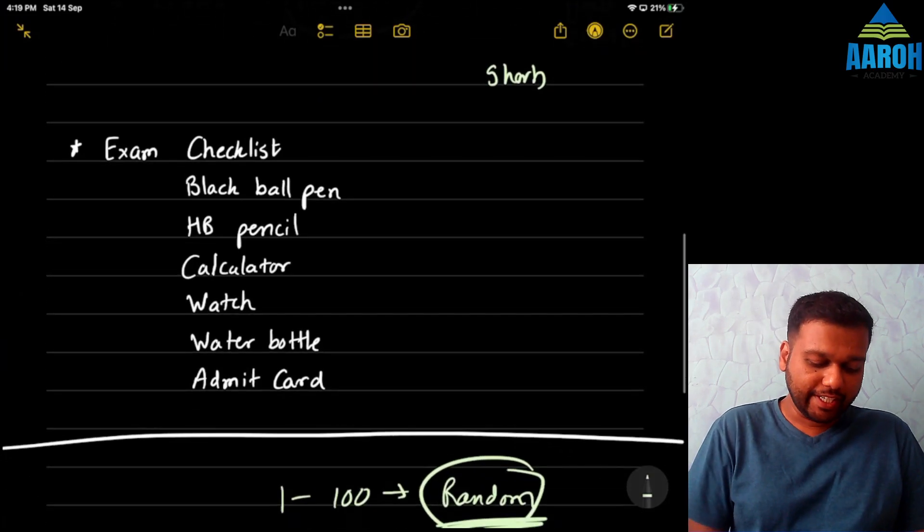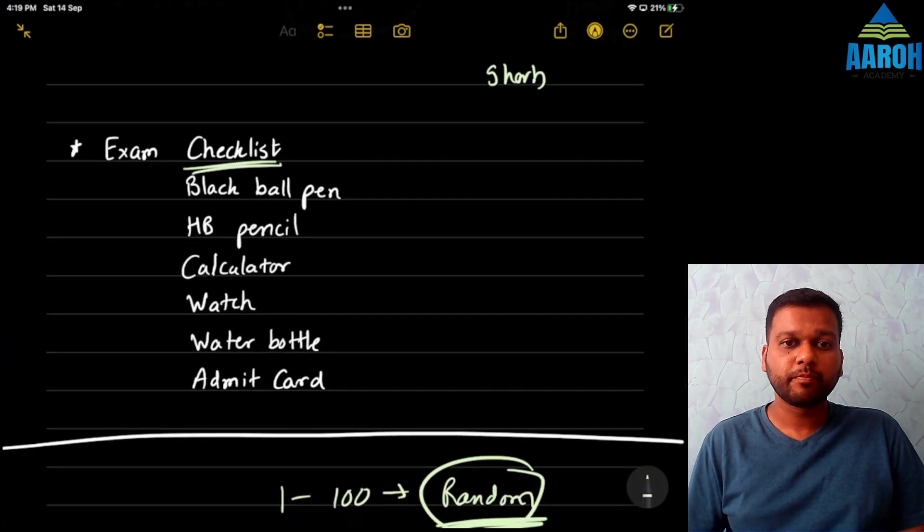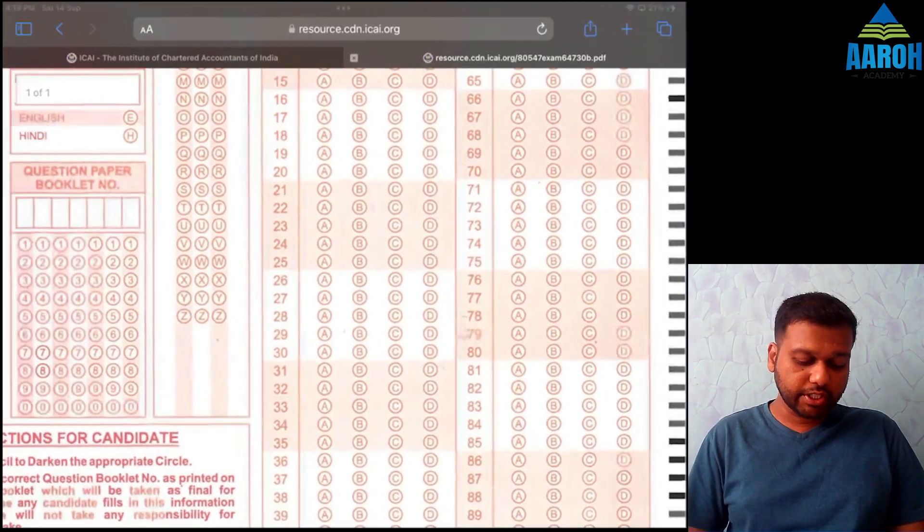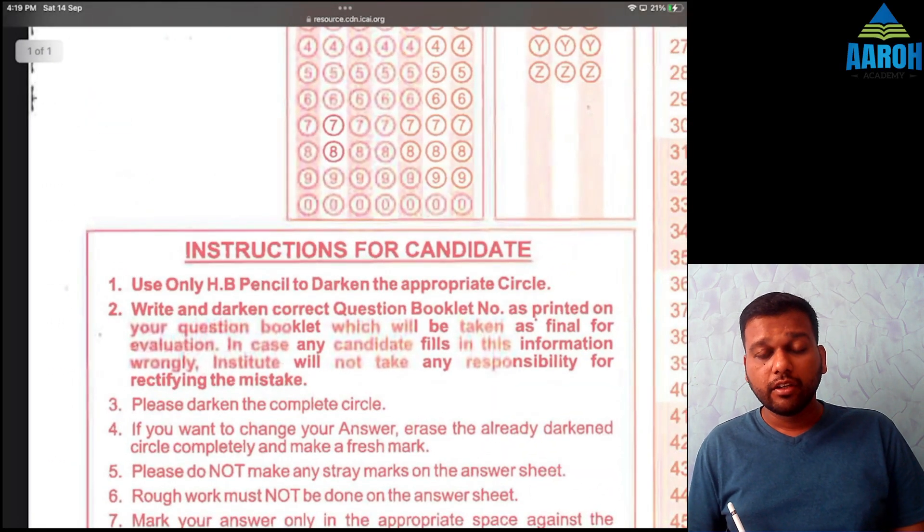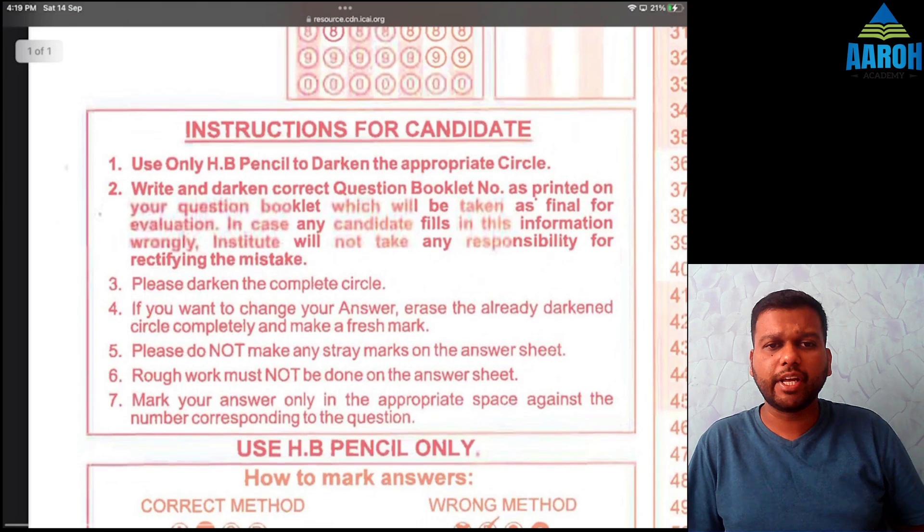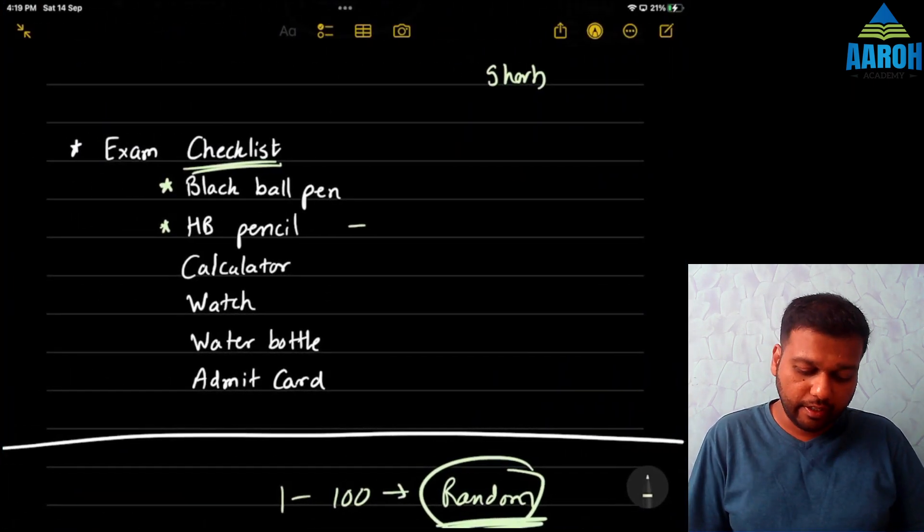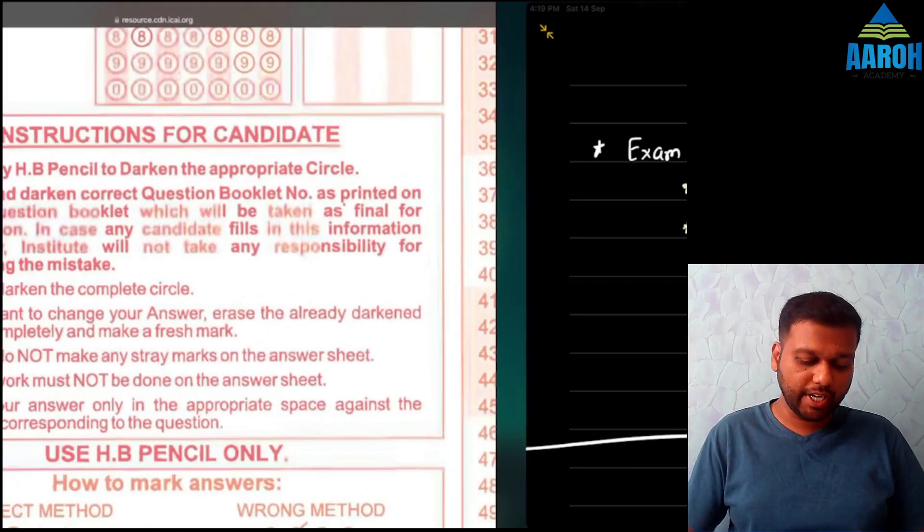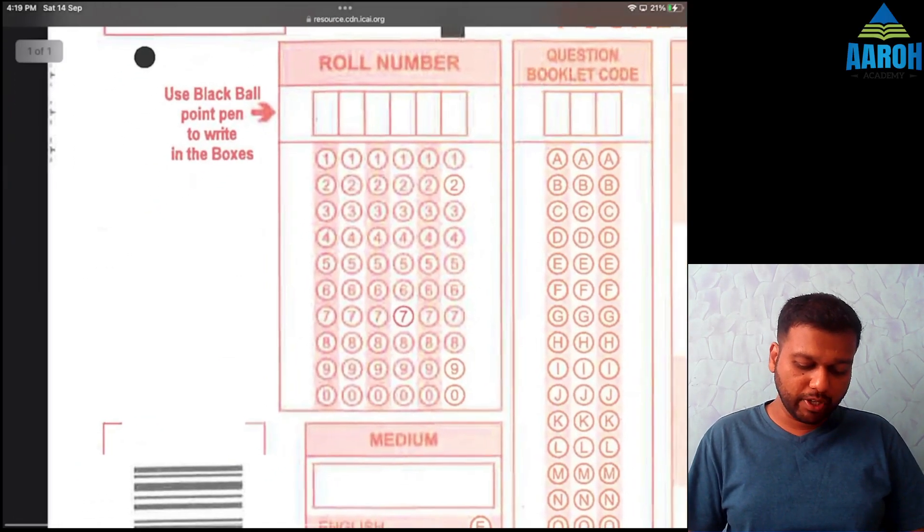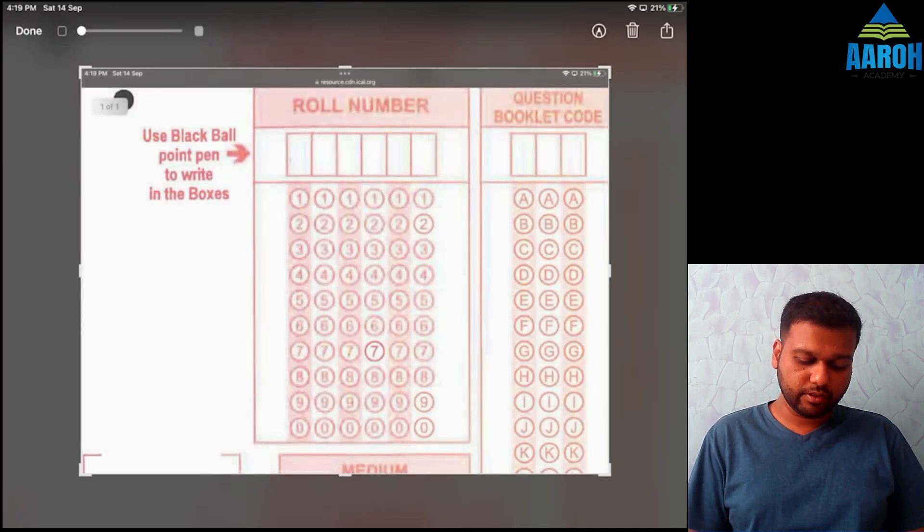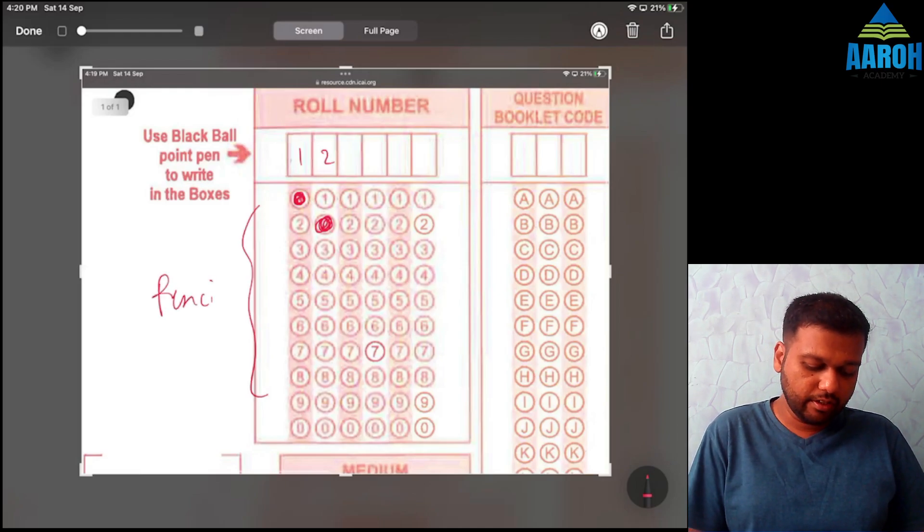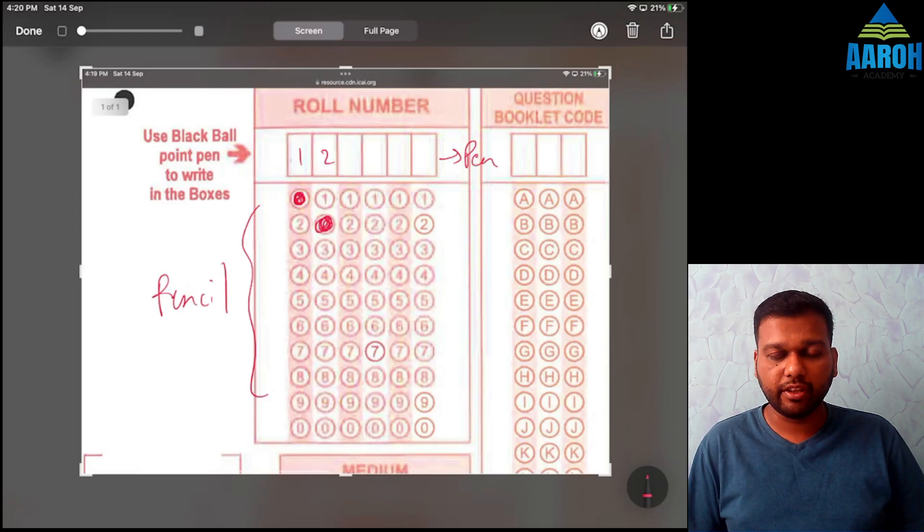Okay, last and most important thing is checklist, what you should carry for your exam. Now, carrying both black ball pen and HB pencil is important because as per the instructions on the OMR sheet, I hope you have read this. Read it beforehand so that you don't have to read it in exam. In exam, you don't have time for that. So use HB pencil to darken appropriate circles. So for circles, you must use HB pencil for those boxes where you have to write your number and everything, you know, these boxes. You have to circle your roll number like this. So for example, your roll number is 1, 2, 3, 4, 5, 6. Then you have to circle 1 with HB pencil, write 1 here with pen. Then circle 2 with HB pencil, write 2 here with pen. So for this, use pencil, for this, use black ballpoint pen.